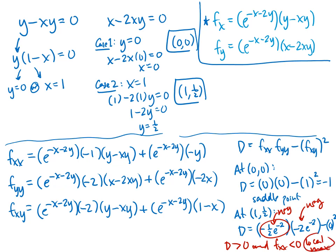Since D is positive and fxx was negative, the second derivative test tells us we have a local maximum at (1, 1/2). It's quite a long problem, but step by step, using this factoring trick to simplify things and get the equations set equal to zero can really help you work through it.